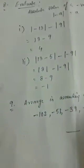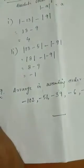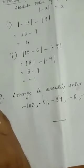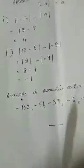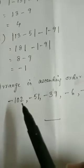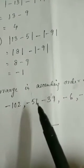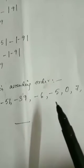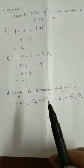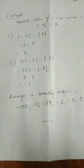Now number 9, the last sum: arrange the following integers in ascending order — minus 39, 35, minus 1, 2, 0, minus 51, minus 5, minus 6, and 7. Write the smallest number first: minus 102, then minus 51, minus 39, minus 6, minus 5, 0, 7, and at last 35. That is all. A few more questions are there in the book — you practice at home. Next day we will start the next chapter. Thank you.